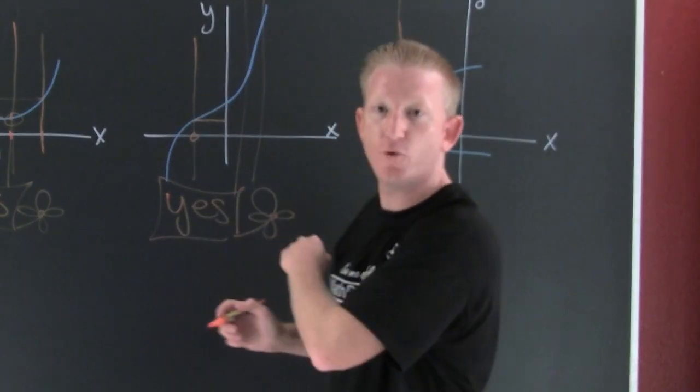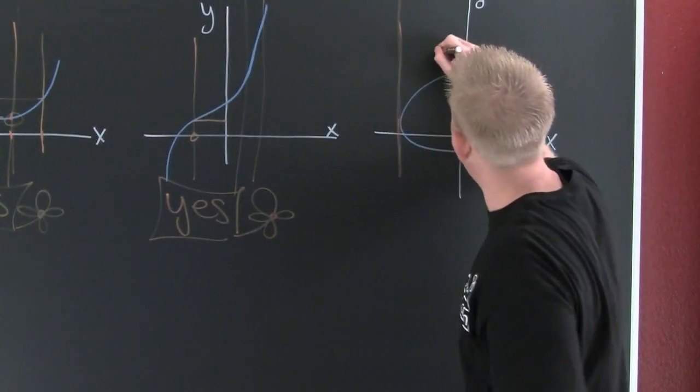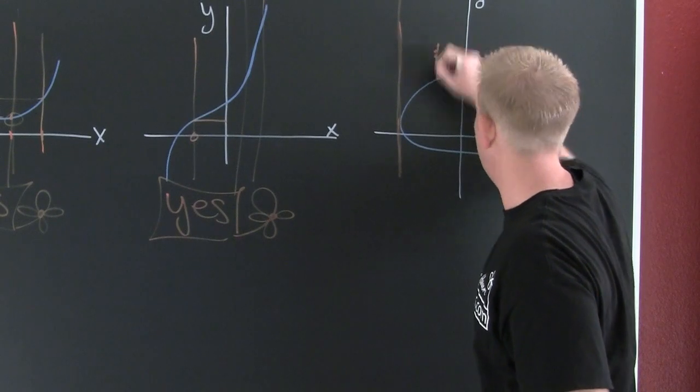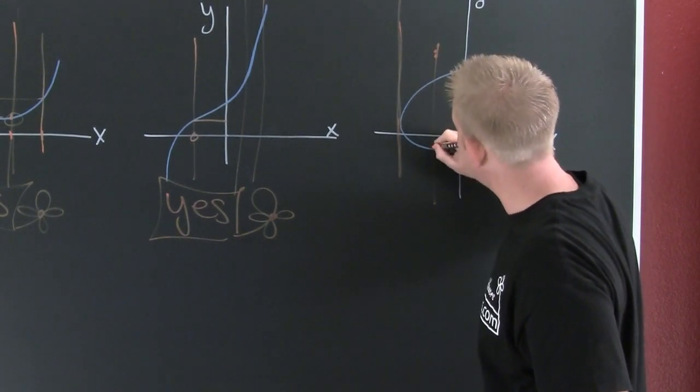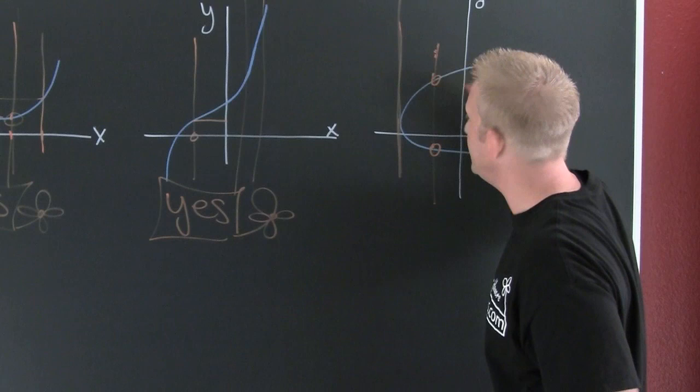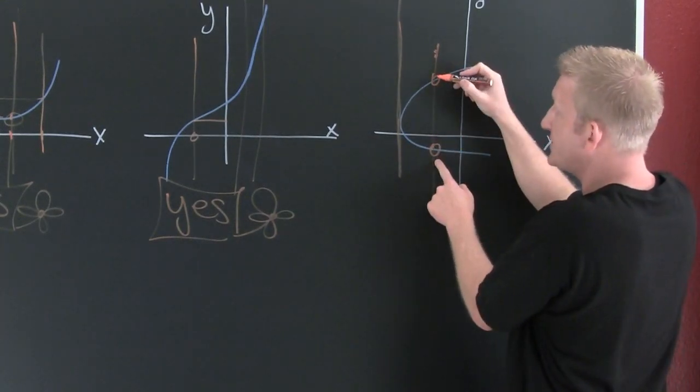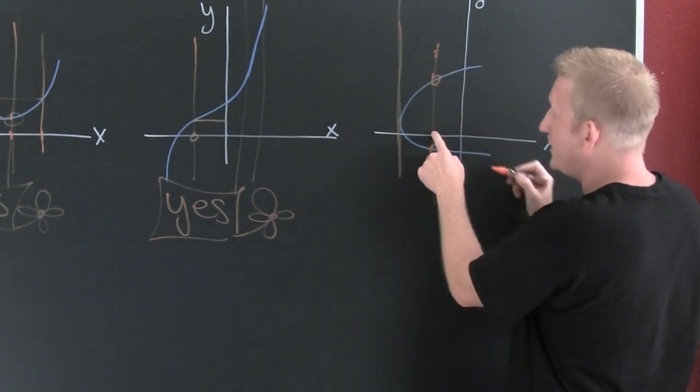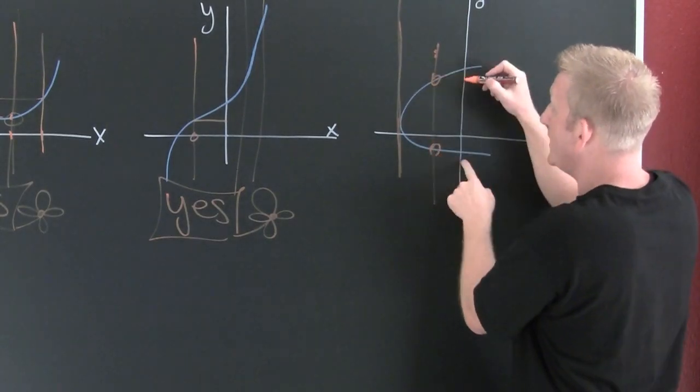No, it's not a function because it has to exist for every vertical line. If we can find just one vertical line, like this one, that crosses this graph in more than one spot, like here and here, then this domain element doesn't correspond to exactly one range element.